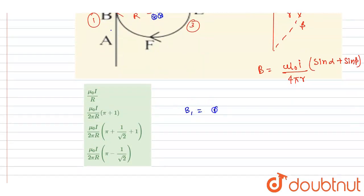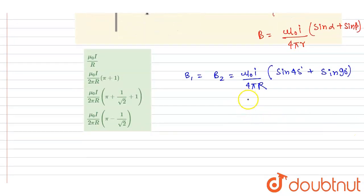So I will write B1, and it is also equal to B2, equals mu_0 I by 4 pi R, distance is R, sin 45 plus sin 90. Sin 90 is 1, sin 45 is 1 by root 2.